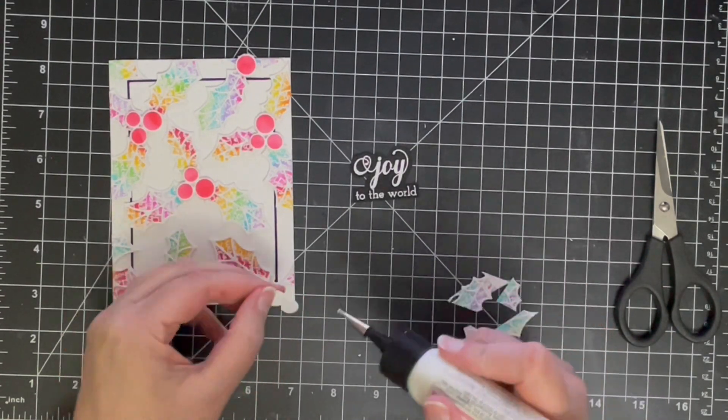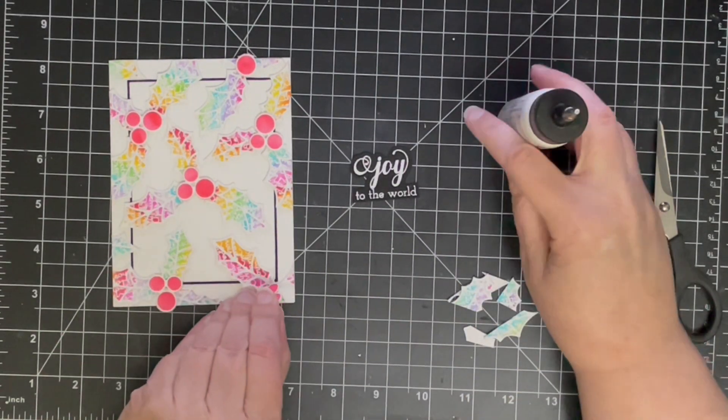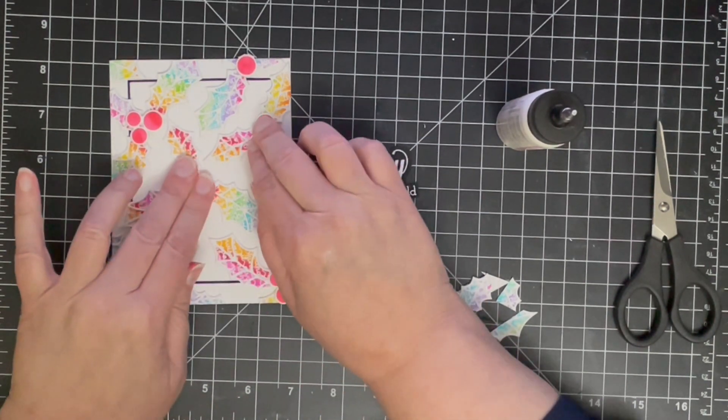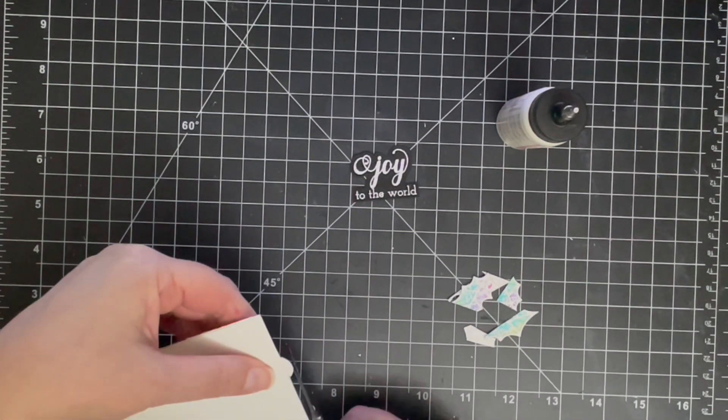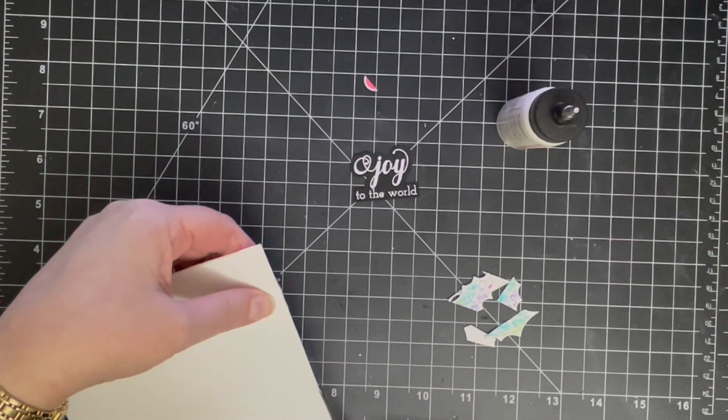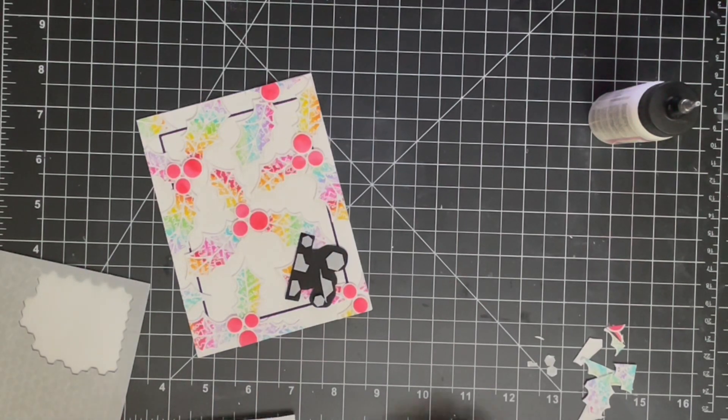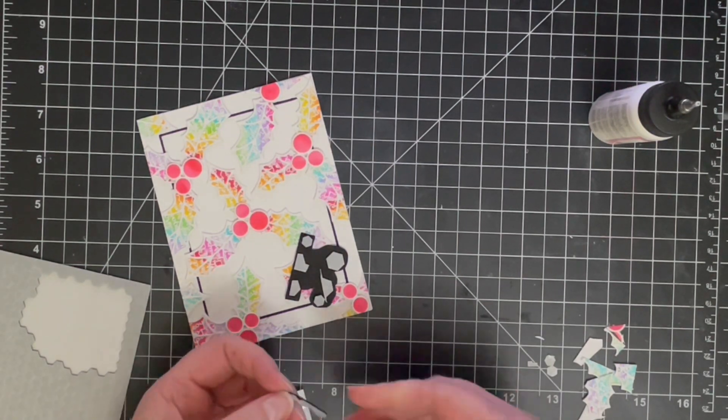Again, I'm using my liquid glue to make sure these are adhered nice and firmly. And I actually, after I cut off the edge of that berry there, I actually did leave it with something heavy on it for a little while before I added this sentiment.